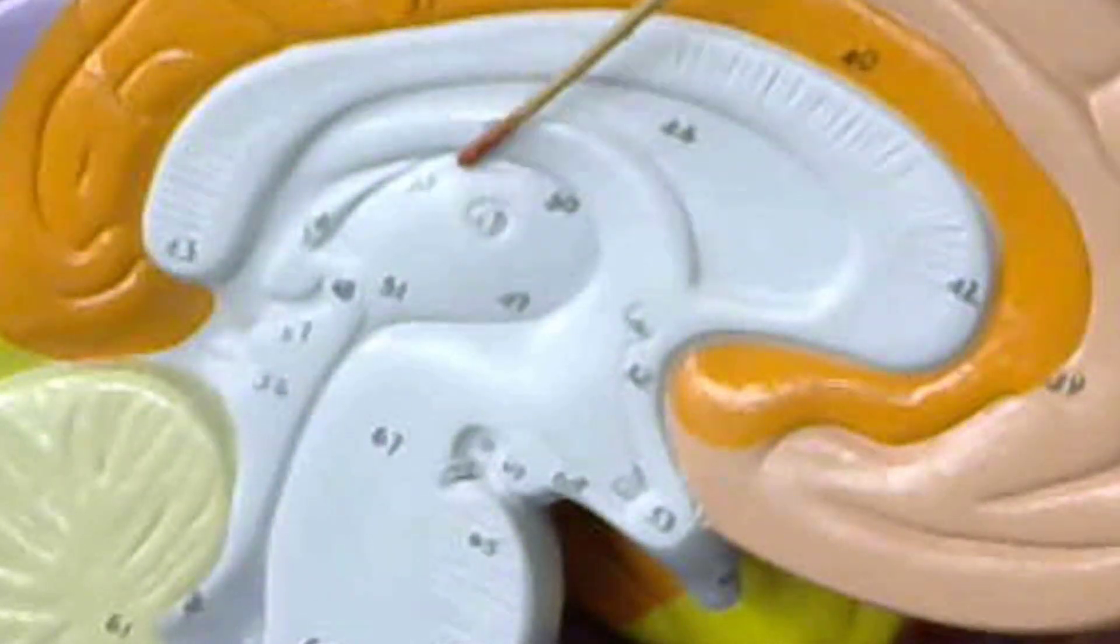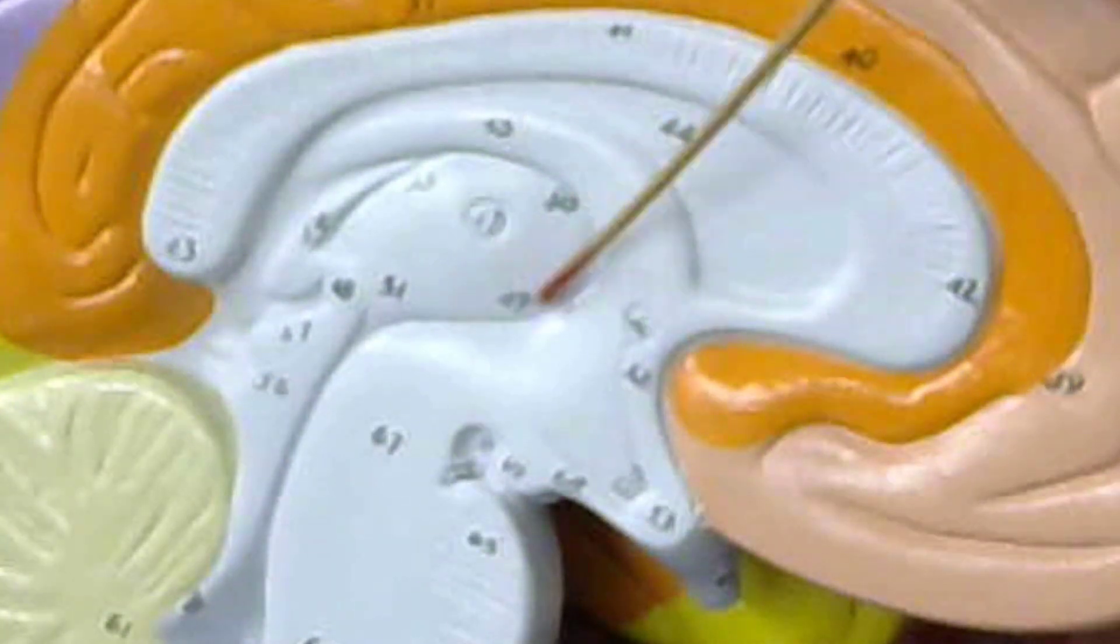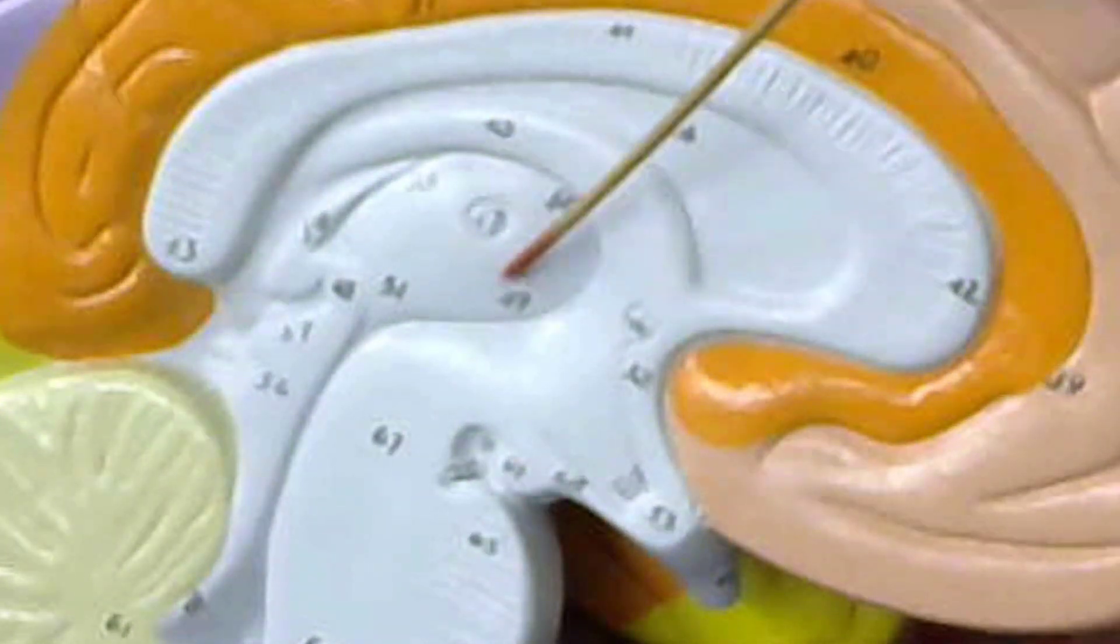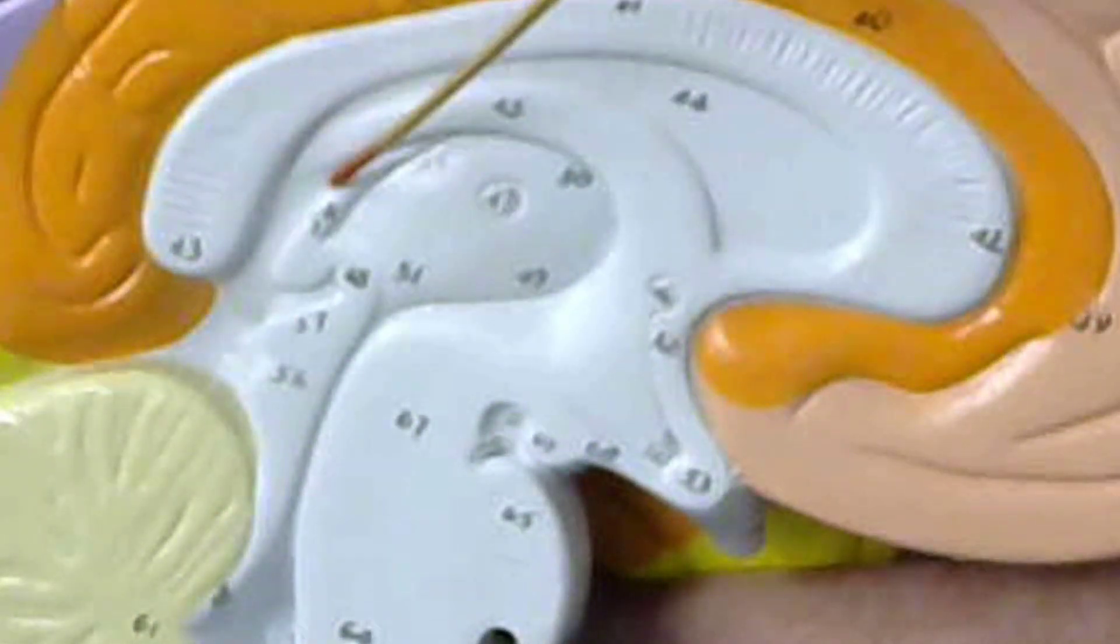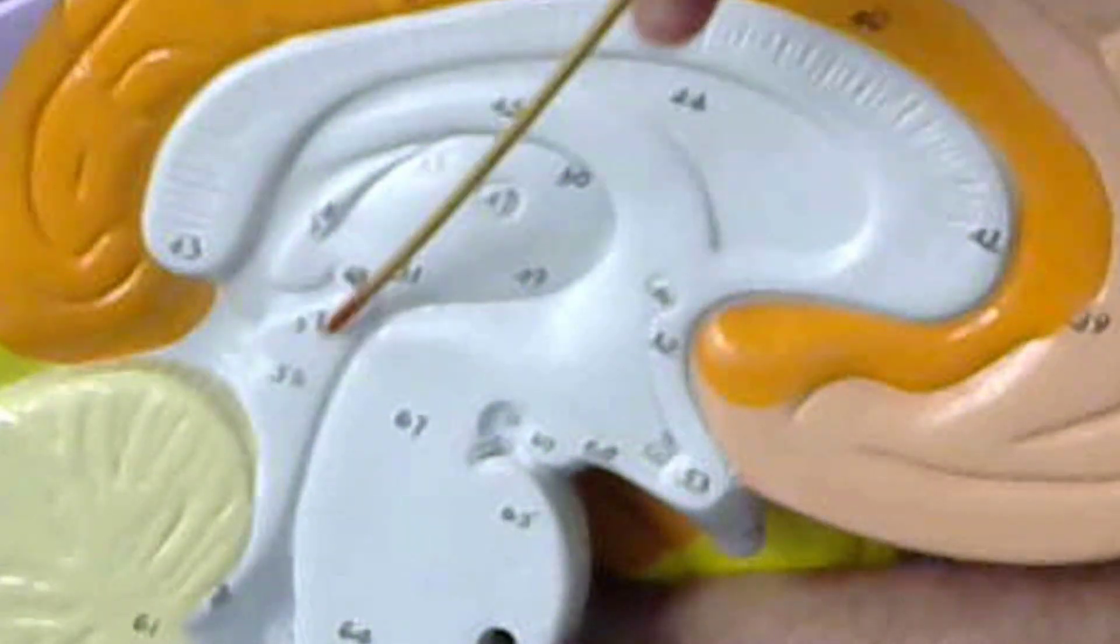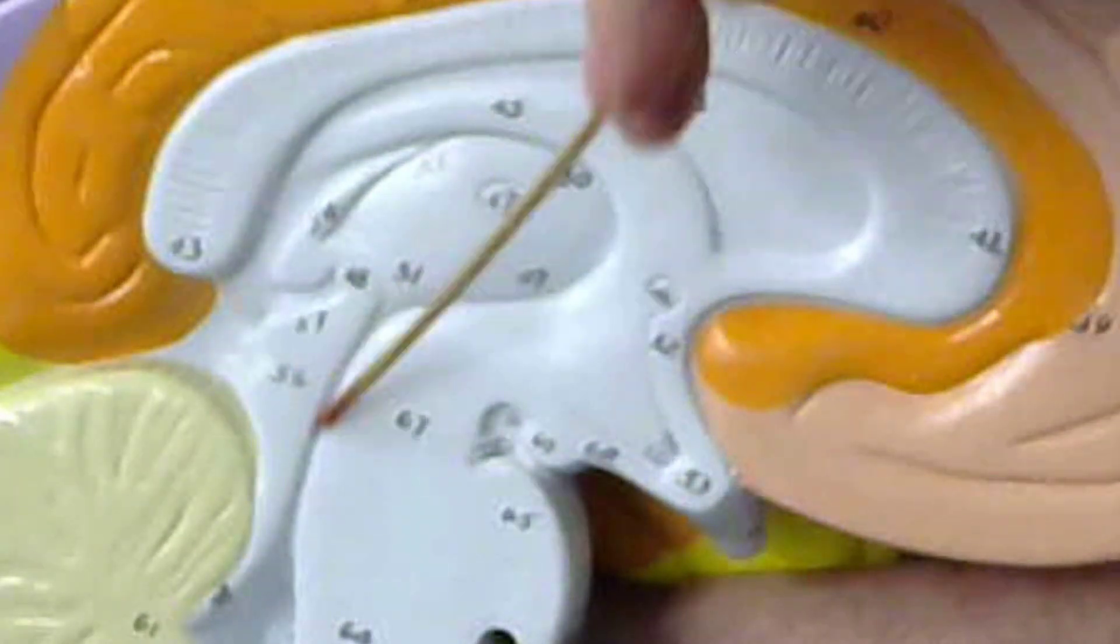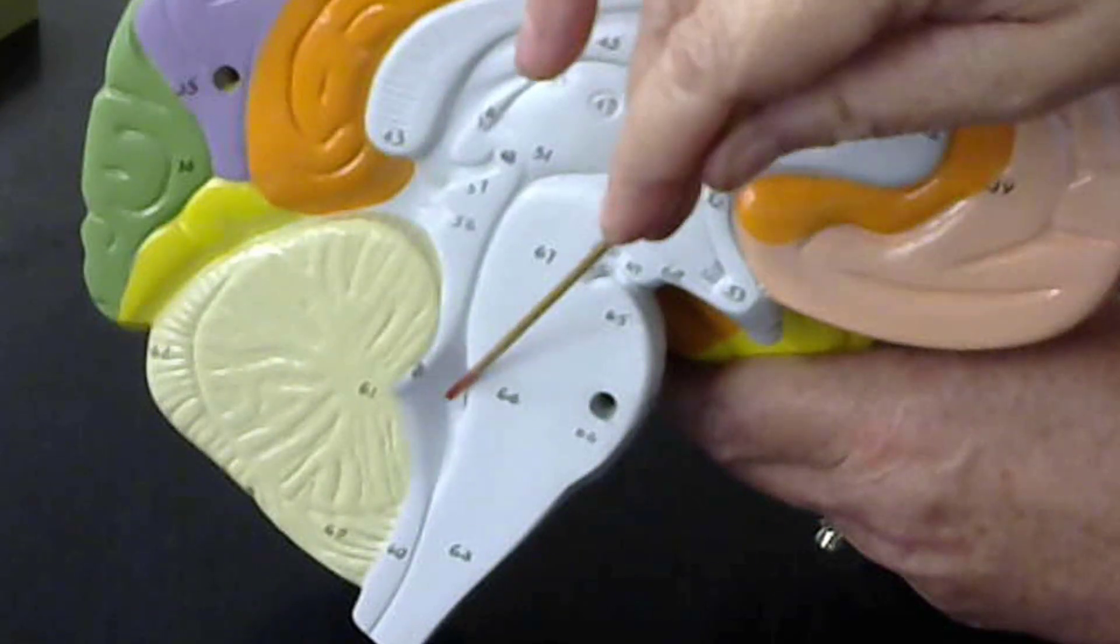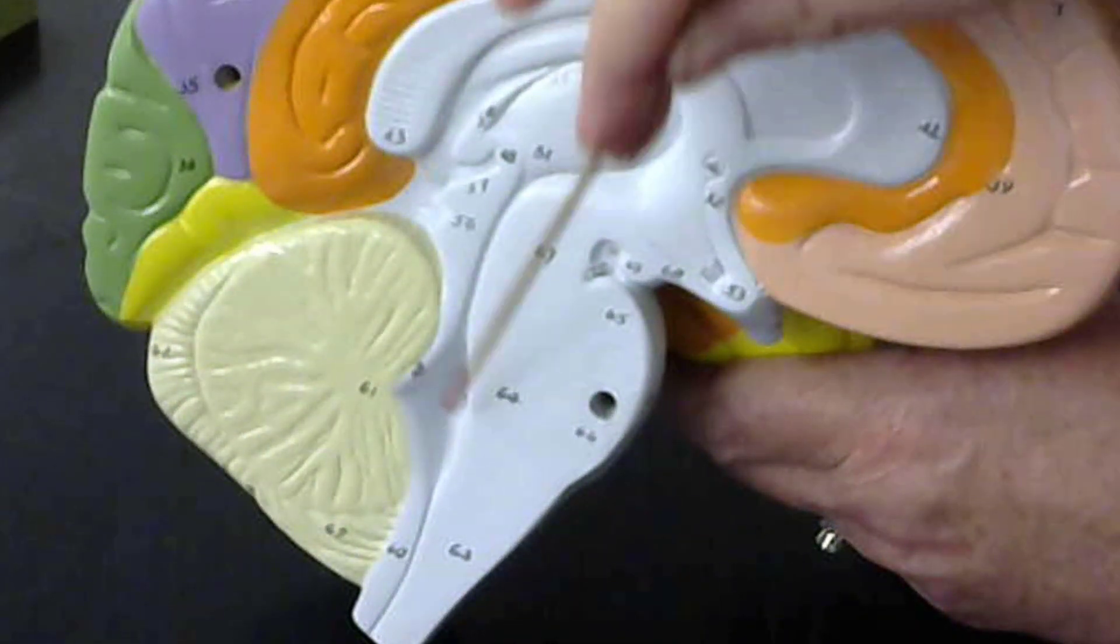This structure here is the thalamus, and the hypothalamus is going to be here in the human brain. Here is where we would have our third ventricle. Here is the pineal gland or pineal body. This is the cerebral aqueduct - it connects the third and fourth ventricles, and the fourth ventricle is right here.